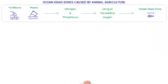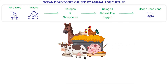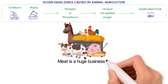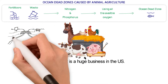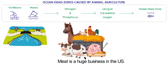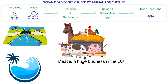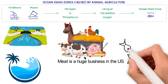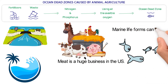Ocean dead zones caused by animal agriculture. Raising animals for meat is a huge business in the U.S. Animal agriculture produces large amounts of fertilizer. Any waste ends up as runoff into local rivers. That runoff carries a large amount of life-giving nitrogen and phosphorus. Eventually, these nutrients make it to the ocean, where they use up all the oxygen. Once this happens, fish and other marine life forms can no longer live there.